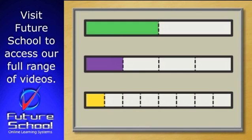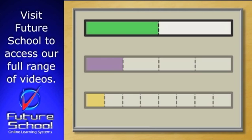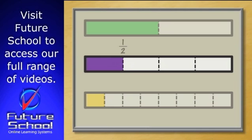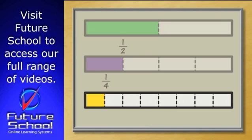Now let's look at all the rectangles again. In the first example we made two equal parts and we shaded one part out of two equal parts, or one half green. In the second example we made four equal parts and we shaded one part out of four equal parts, or one quarter purple. And in the last example we made eight equal parts and we shaded one part out of eight equal parts, or one eighth yellow.